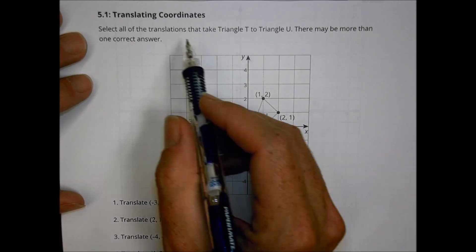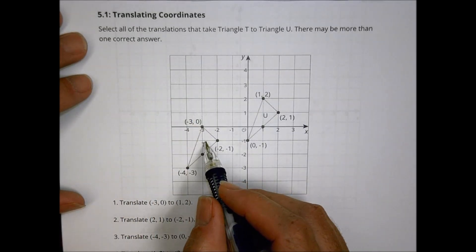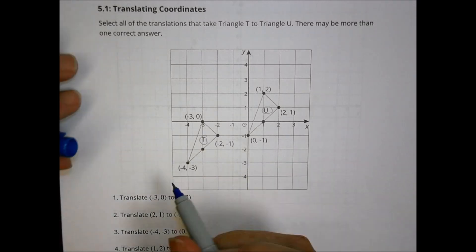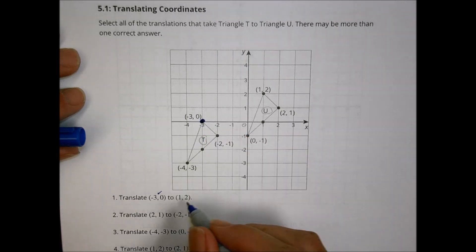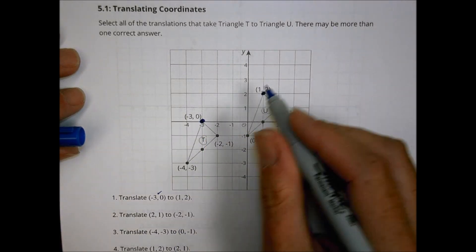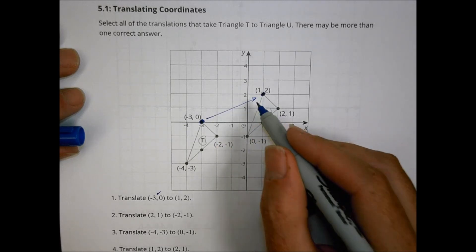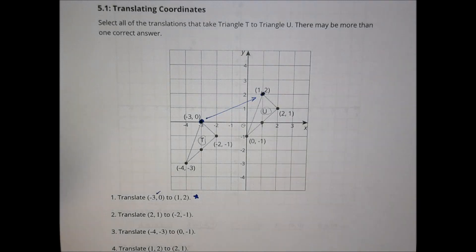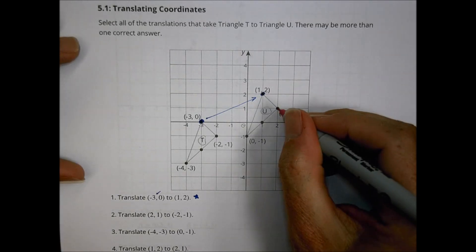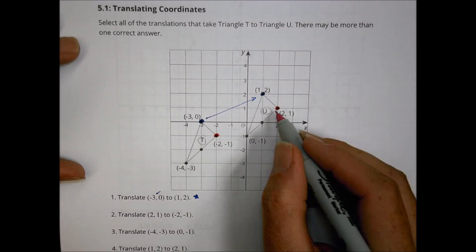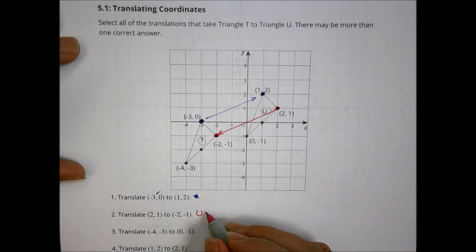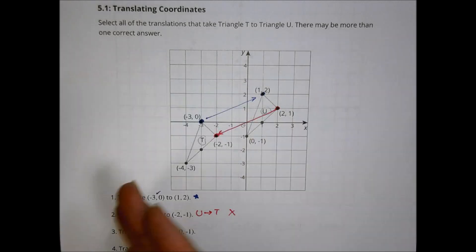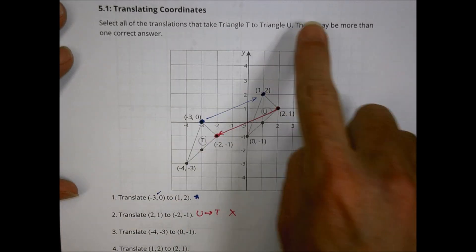The first problem from class asked you to select translations that take triangle T to U — there might be more than one correct answer. If I start at negative 3, 0 and move it to 1, 2, is that a good translation? Yes, that keeps everything the same shape without spinning. But translating from 2, 1 to negative 2, 1 is going from U to T, not T to U — so that one doesn't work. Follow the directions carefully and make sure you know where you want to go.